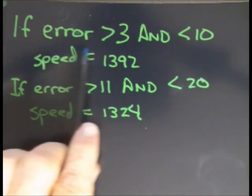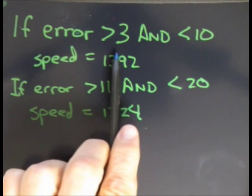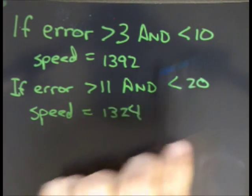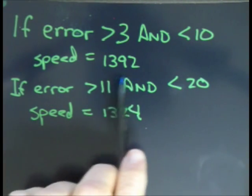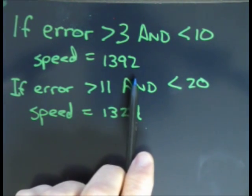Here, the calculated error is the difference between your actual and desired position from the ADC. If it's greater than 3 and less than 10, which means it's very close, I want the speed to be this value, which corresponds to a pulse width modulation input.